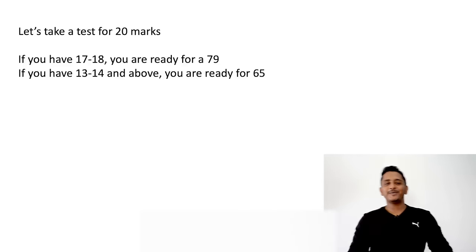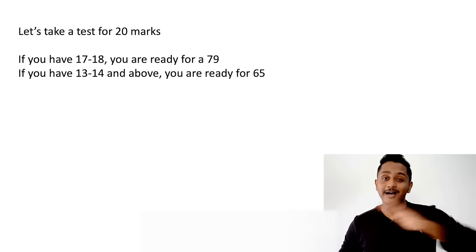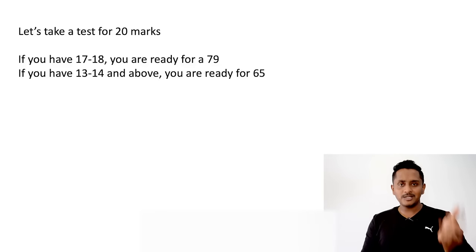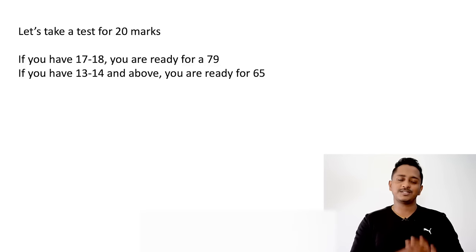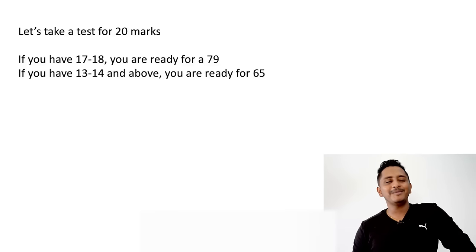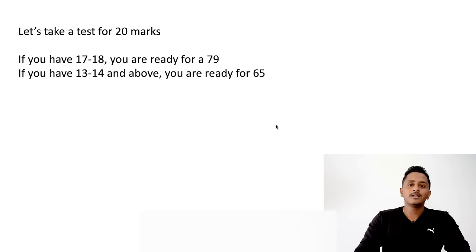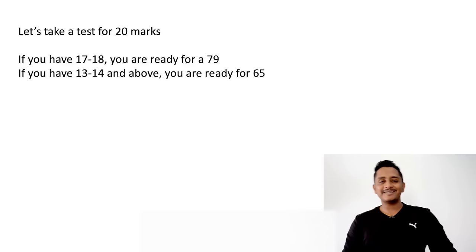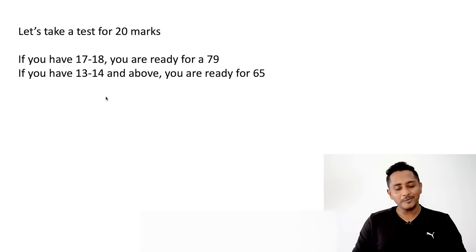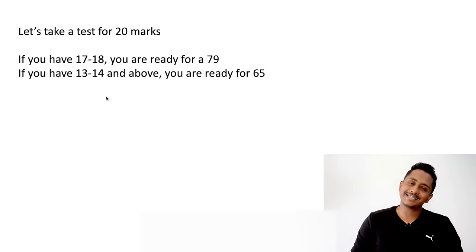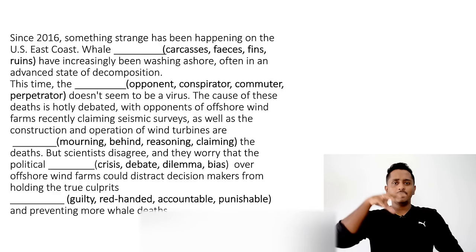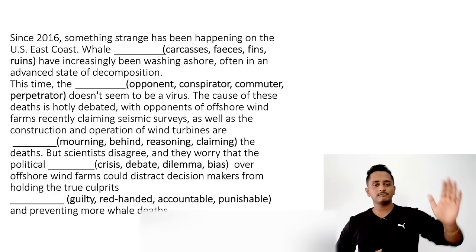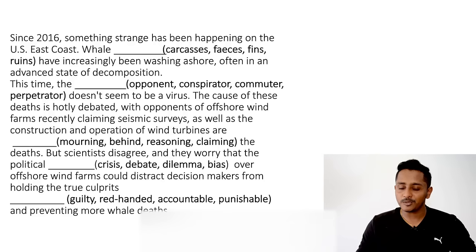Now we have a full test — four questions, 20 marks total, and they are genuinely difficult. In the exam this module is challenging, which is why people score low in writing. If you need 79 and above in reading and writing, aim for 17 or 18 out of 20. For 65 and above, aim for 13 to 14. Pause the video, do each question, then resume to check your approach.